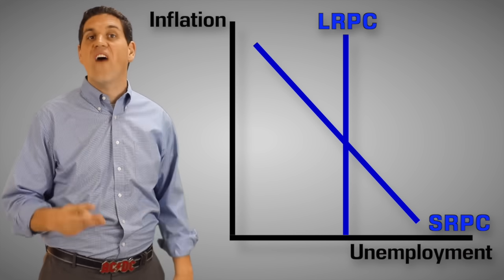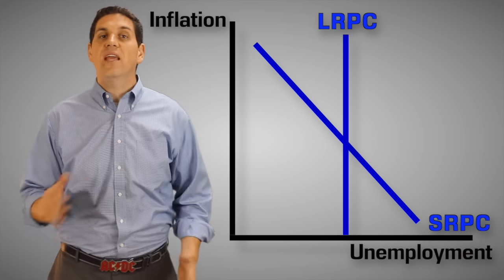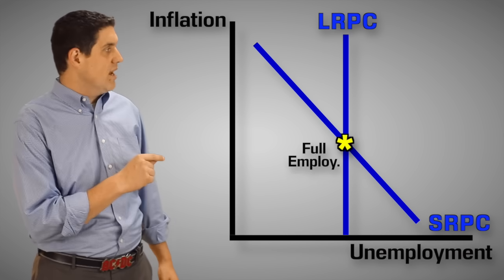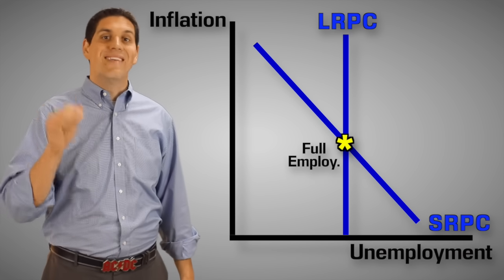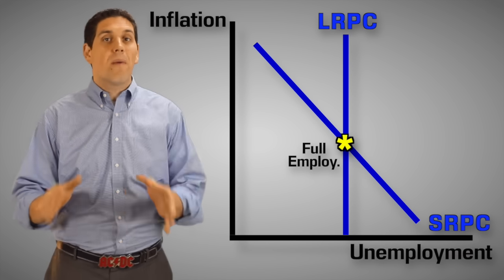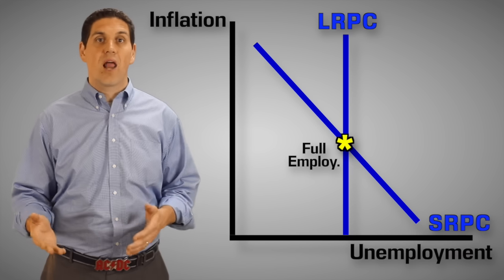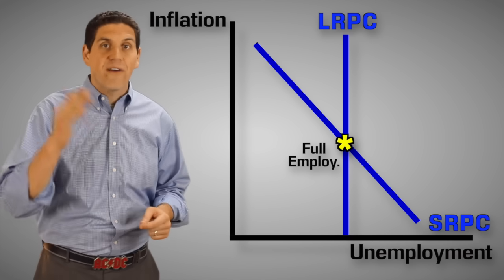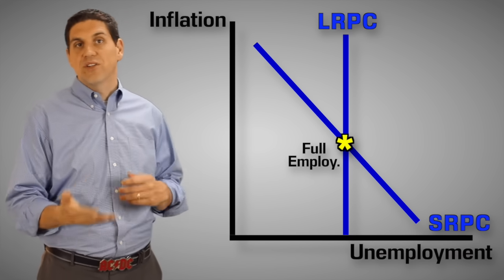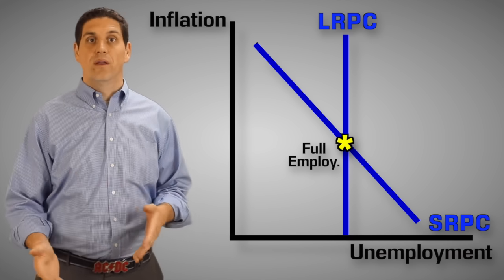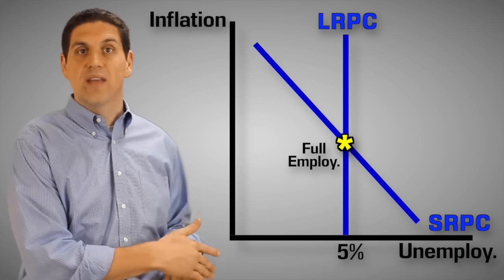Now let's use the graph to find the three different places the economy can be in. The easiest one is right here, which is the idea of full employment. This is the idea of the natural rate of unemployment. Remember, 0% unemployment is not the goal for the economy. We're always going to have frictional and structural unemployment, so 4% to 6% unemployment is considered full employment. In this case, let's just call it 5% unemployment.